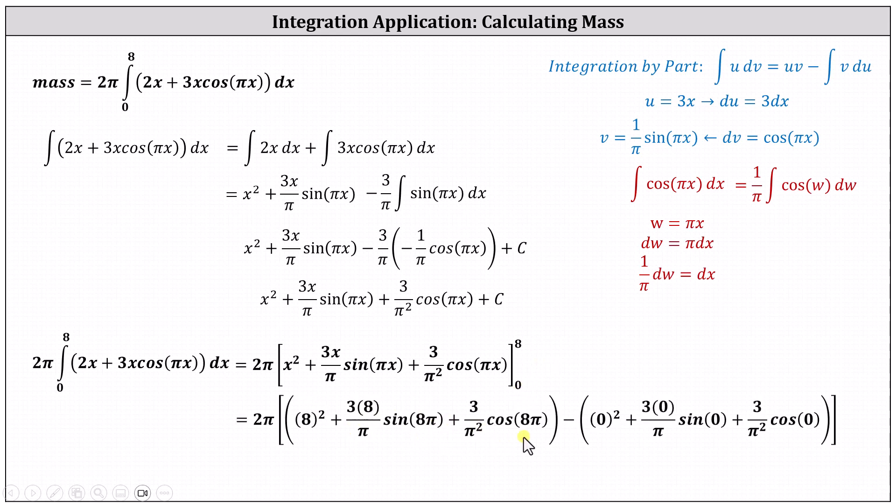Here is F(8), here is F(0). Simplifying, the exact mass is 128π, which is approximately 402.1239.